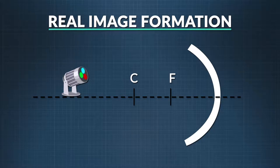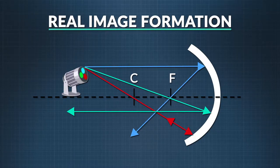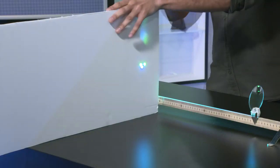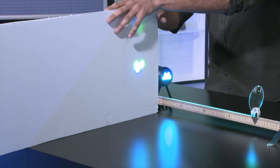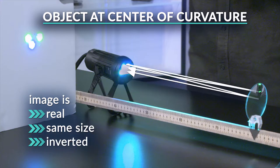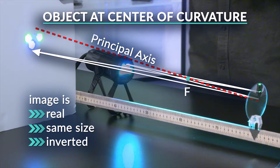Let's look at why that is. The light doesn't converge at the focal point — it converges on the other side of the principal axis, between the focal point and the center of curvature. All real images are inverted because they converge on the other side of the principal axis. Now I'm moving the light closer to the center of curvature. The image got bigger — it's the same size as the actual object, and it's still inverted, because the image has moved further away from the mirror.